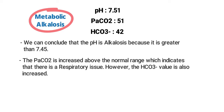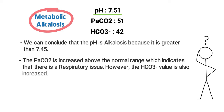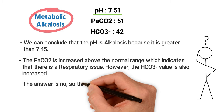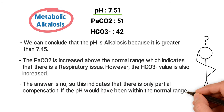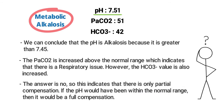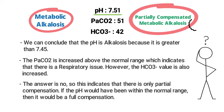Now we need to determine if this is a full compensation or a partial compensation. To answer this question, we need to look back at the pH. Was the compensation enough to bring the pH back to normal? The answer is no. This indicates that there is only a partial compensation. If the pH would have been within the normal range, then it would be a full compensation. But in this case, it is only partially compensated. So, this ABG can be interpreted as partially compensated metabolic alkalosis.